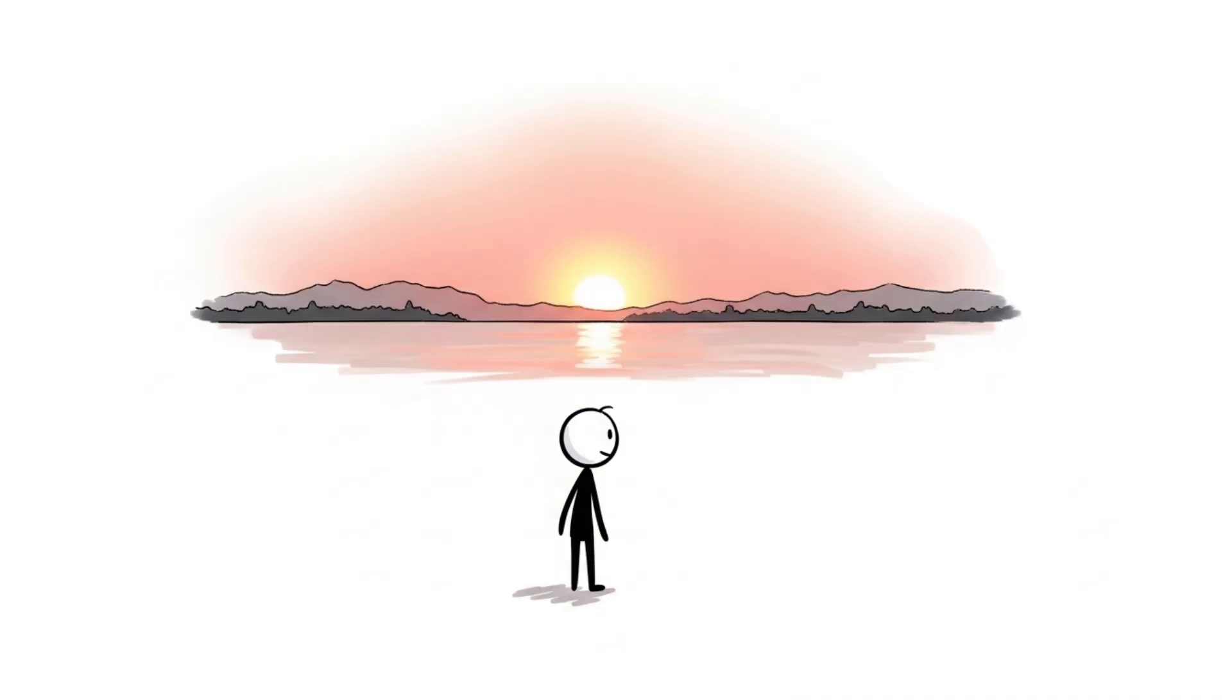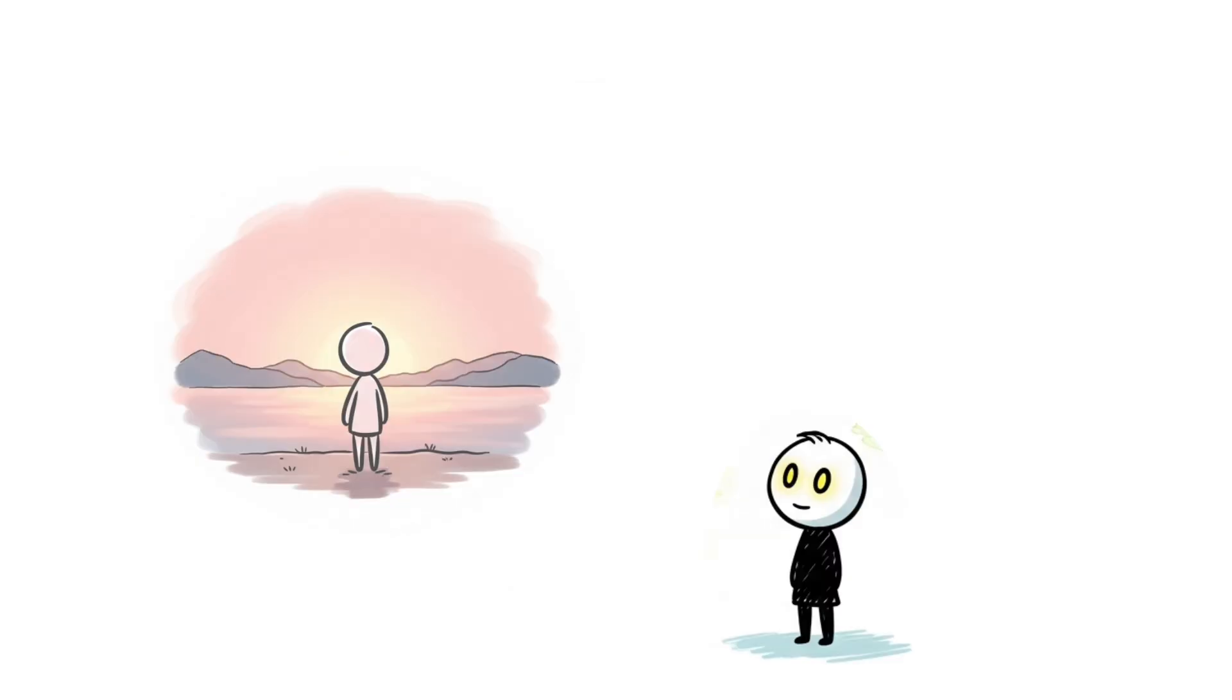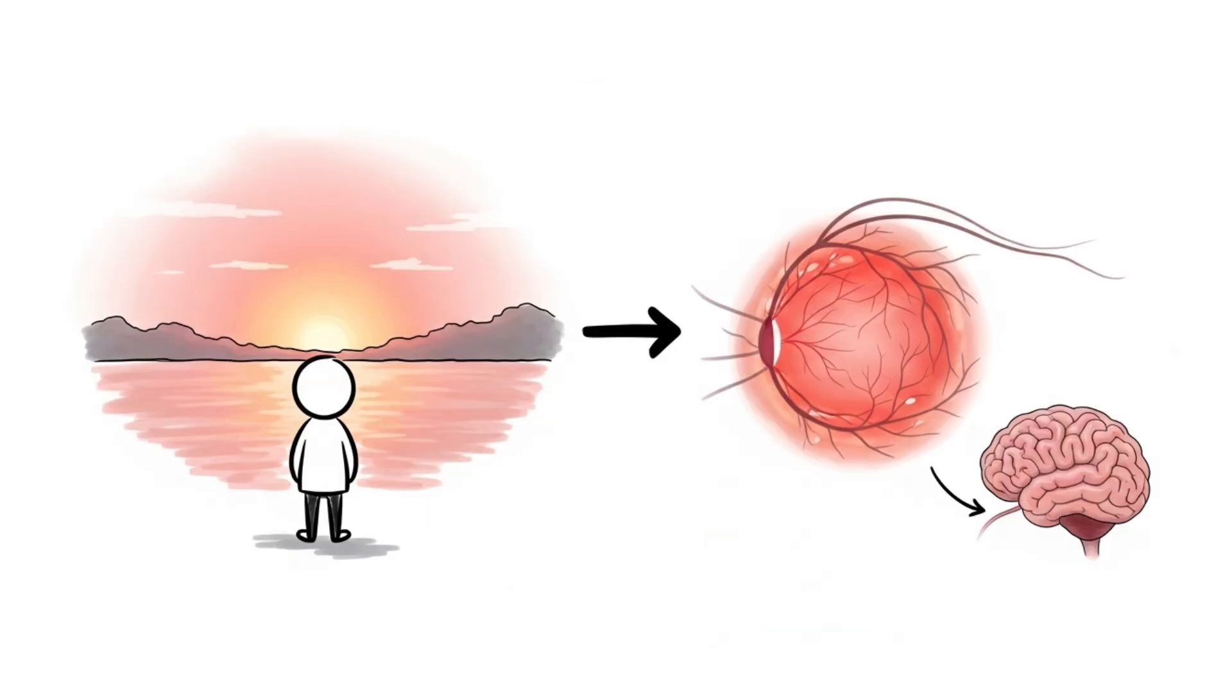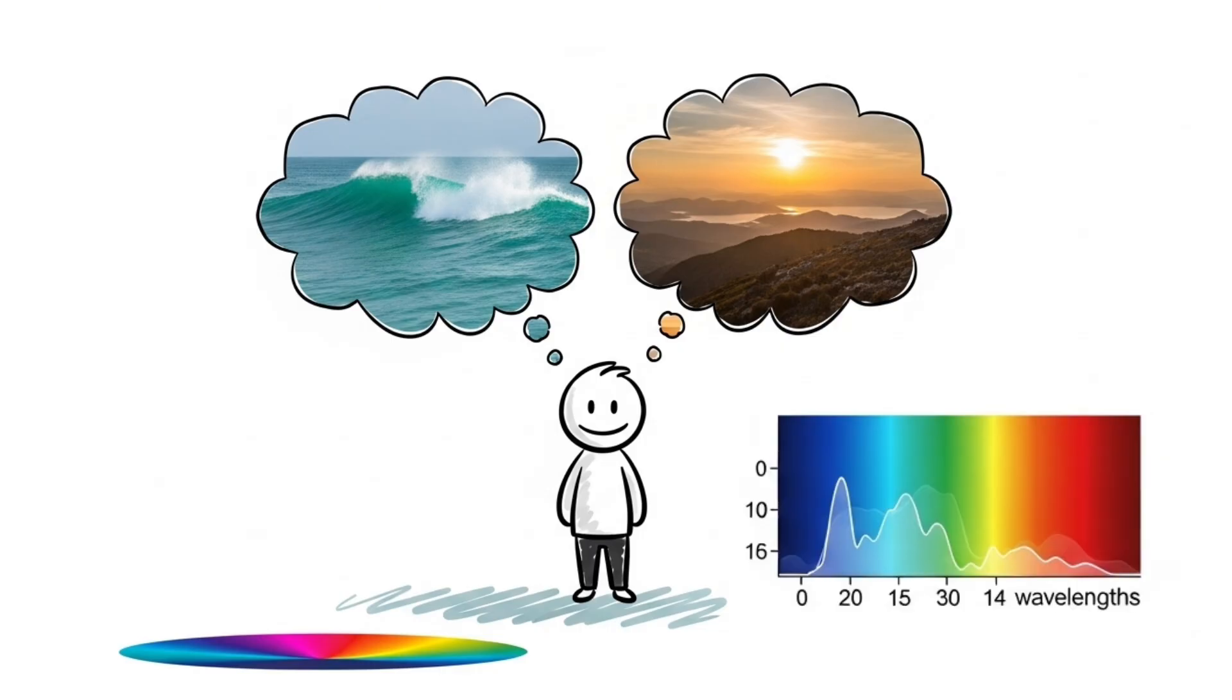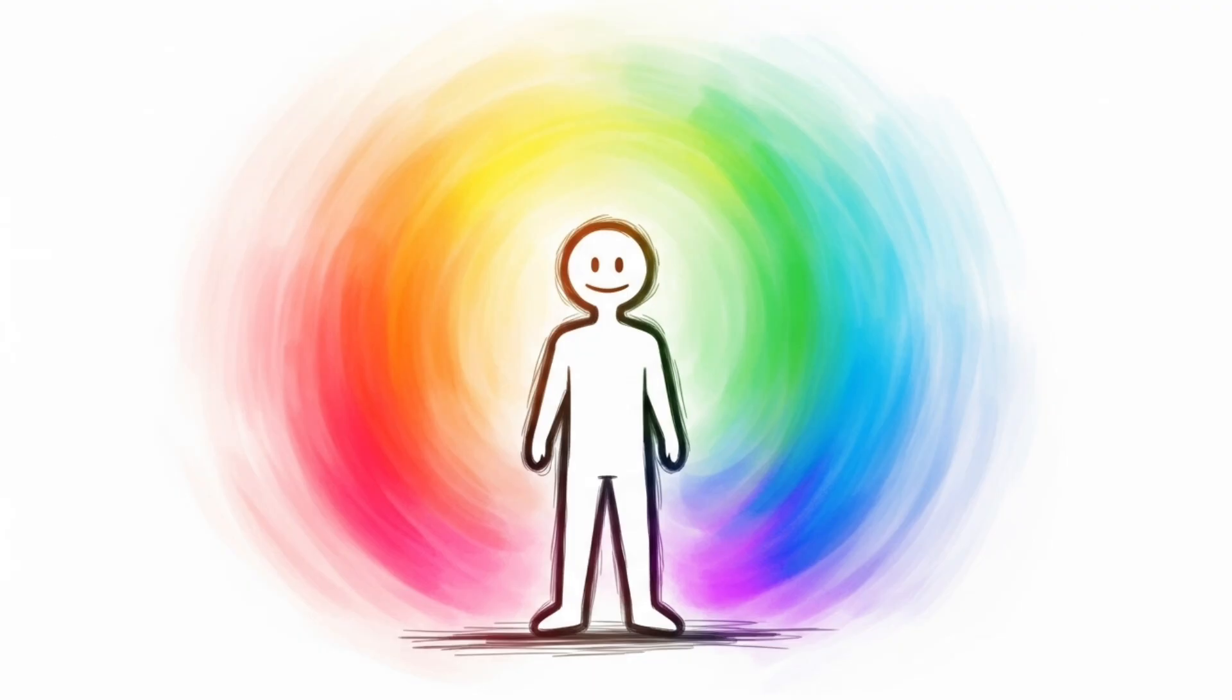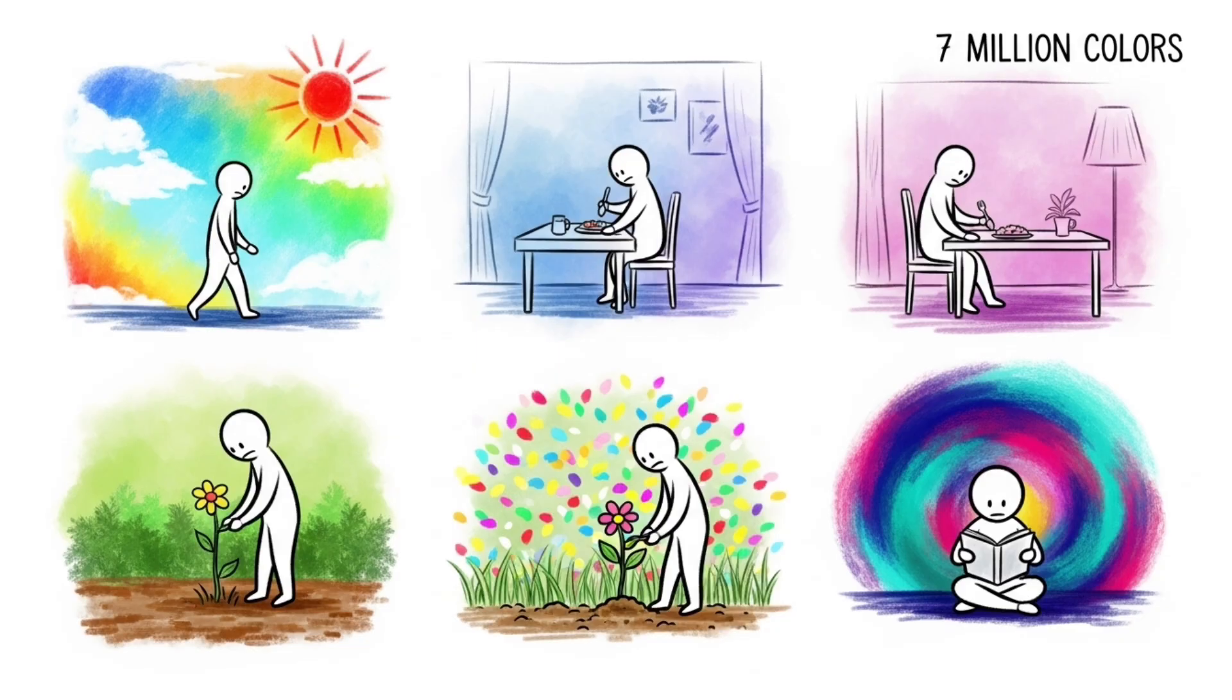That rosy tint in early morning light, that's not your imagination, that's your retinas picking up specific wavelengths and your brain translating that into an experience only you can have. The bluish green of seafoam, the warmth of golden hour, these aren't approximations, they're precise biological translations of physical reality. You're experiencing a private spectrum that's uniquely yours, seven million colors that only you perceive exactly this way, and you probably don't think about it once a day.